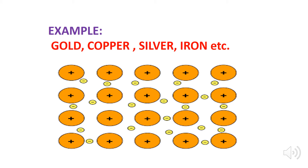Now look at the diagram of the metallic bond here. There are positive nuclei and the electrons are free to move around these positive nuclei. Therefore, we can say that metals are good conductors of electricity because the electrons are free to move, which can easily conduct electricity.